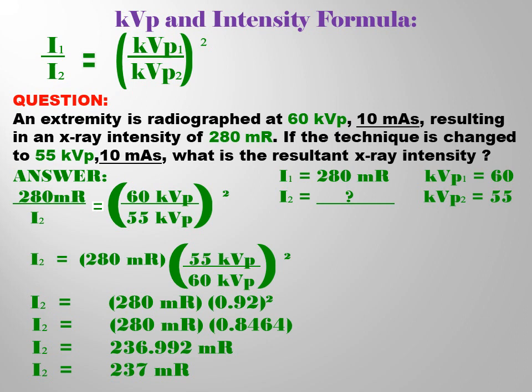In this question, you will know that the KVP is decreased from 60 to 55 KVP. So we have I sub 1, or initial intensity, which is 280 mR.